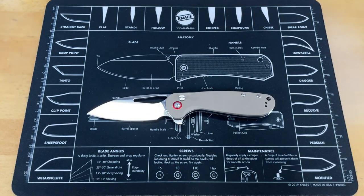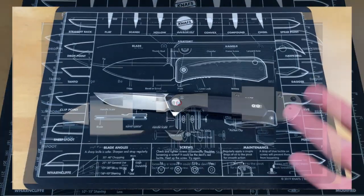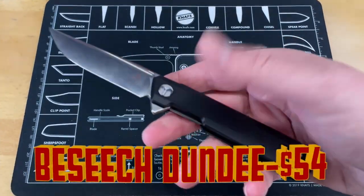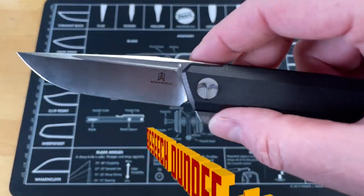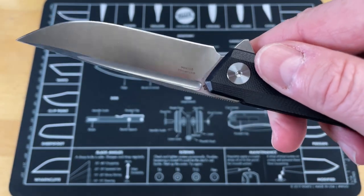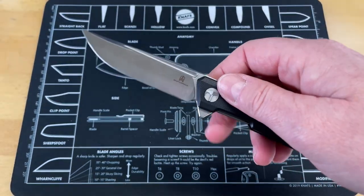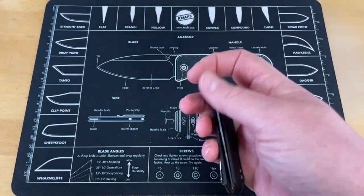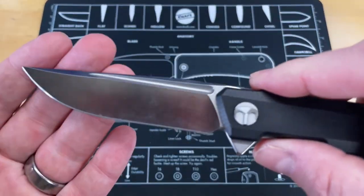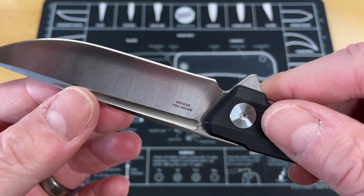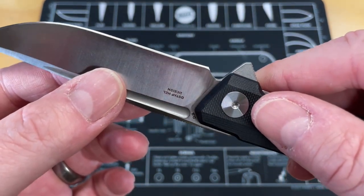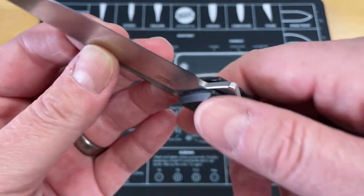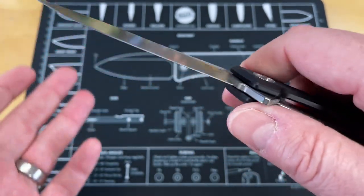We're going to do these in ascending price order. This is the Best Techman Dundee, part of Best Tech's new budget line called Best Techman. Coming in at $54, you're getting a lot for your money. You've got a really well done D2 blade that after sharpening has held its edge really well. It's ground nice and thin.